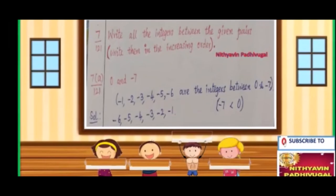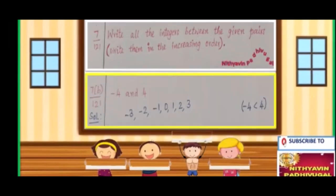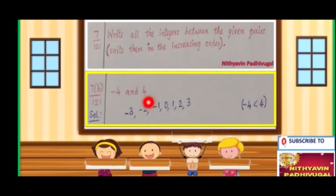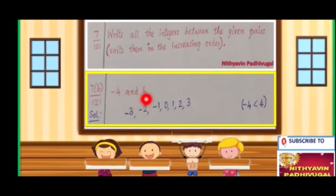Next, minus 4 and 4. Between minus 4 and 4, we have negative numbers, 0, and positive numbers. Negative numbers are smaller than 0 and the positive numbers. So let us start from the negative numbers: minus 3, minus 2, minus 1, 0, 1, 2, 3. These are the integers between minus 4 and 4 in increasing order, from smaller number to bigger number.